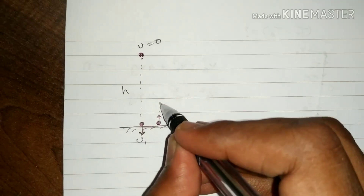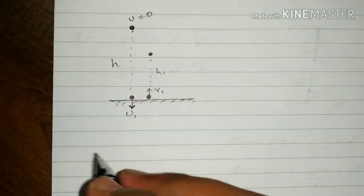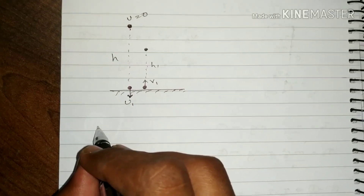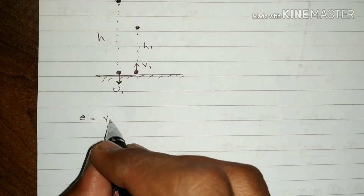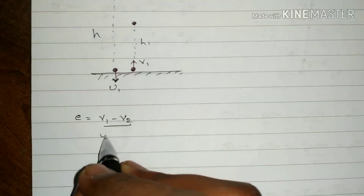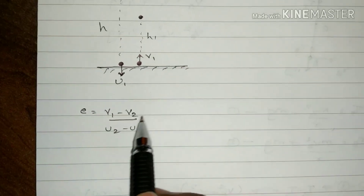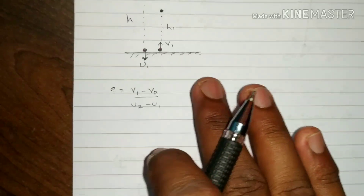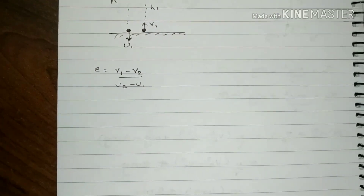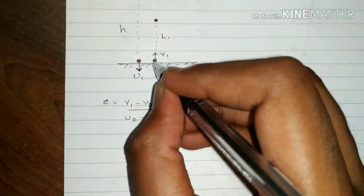It will go back to a particular height which I will call h1. Before proceeding any further, you must know what is the formula for coefficient of restitution. Coefficient of restitution is denoted by e and it is generally expressed as (v1 − v2) / (u2 − u1), where 1 is one body and 2 is another body. That means it is relative final velocity upon relative initial velocity with a negative sign. Let us consider earth is body number 2 and this ball is body number 1.